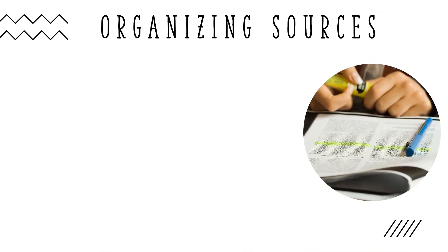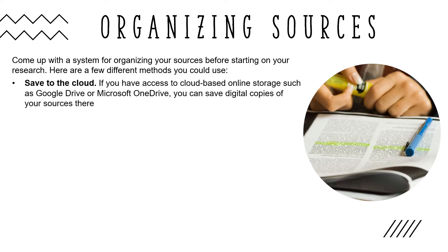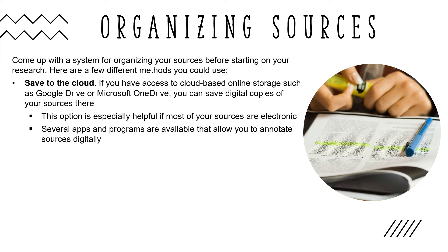To save yourself a lot of trouble and time, you should come up with a system for organizing your sources before starting on your research. If you have access to cloud-based online storage, such as Google Drive or Microsoft OneDrive, you can save digital copies of your sources there. This option is especially helpful if most of your sources are electronic. In addition, several apps and programs are available that allow you to annotate sources digitally.